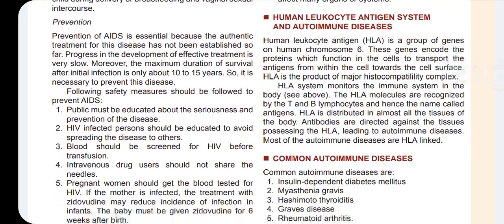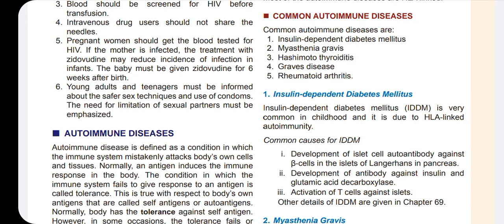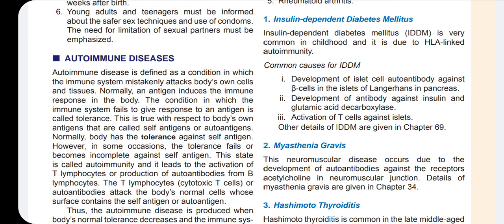Common autoimmune diseases include insulin-dependent diabetes, myasthenia gravis, Hashimoto's thyroiditis, Graves' disease, and rheumatoid arthritis. Myasthenia gravis affects the neuromuscular junction — acetylcholinesterase is disrupted and keeps on producing signals, leading to muscle weakness.